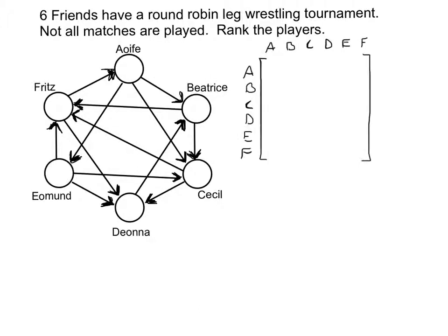I need to be a little bit careful when I do the entries. When I'm doing this row, this is who Apha beat. She beat Beatrice, Cecil, and Eamon, so I'm going to put ones in there. She didn't beat anybody else, so the rest are zeros, including versus Dana, even though they didn't have a match. Then row B, Beatrice — she beat Cecil and Fritz, so I put ones there, and the rest are zeros.